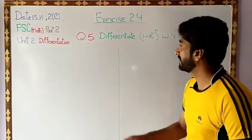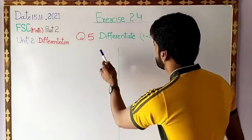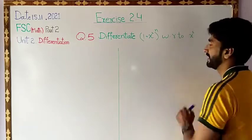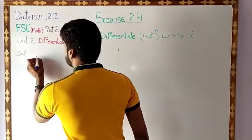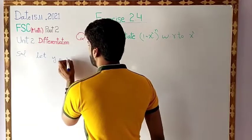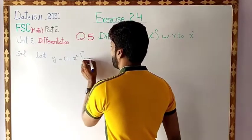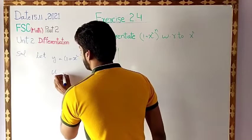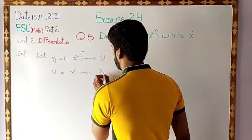Exercise 2.4, the last question number 5. The statement of question number 5 is: differentiate (1 plus x square) whole to the power n with respect to x square. Both functions are independent. First, let the first function be y equal to (1 plus x square) whole to the power n — this is equation 1. Second, let u equal to x square — this is equation 2.